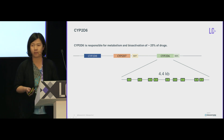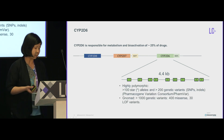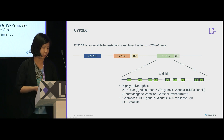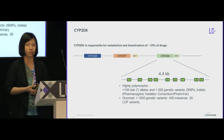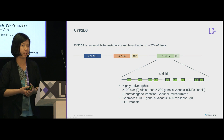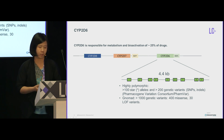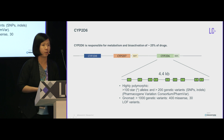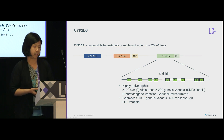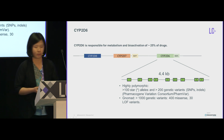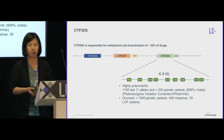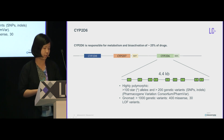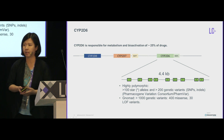Despite the small size of the gene, it is highly polymorphic. The PharmVar — or Pharmacogenes Variant Consortium — database has recorded more than 100 star alleles with more than 200 genetic variants, including SNPs and indels in this gene. The GNOMAD database has recorded more than 1,000 genetic variants in this small gene, including more than 400 missense and more than 30 loss-of-function variants.